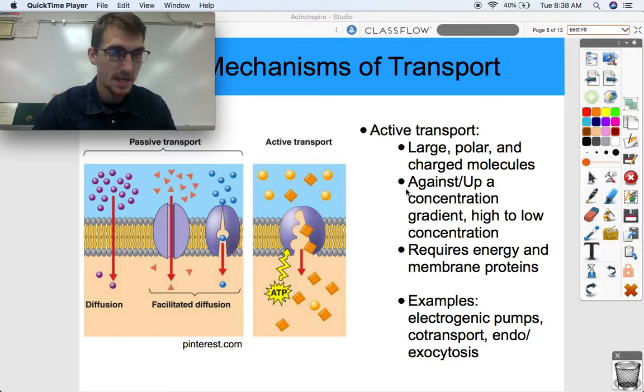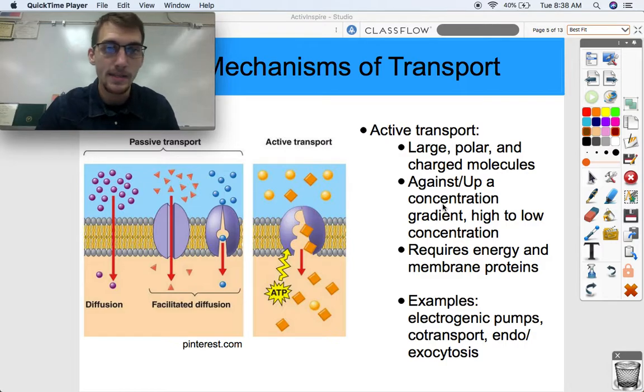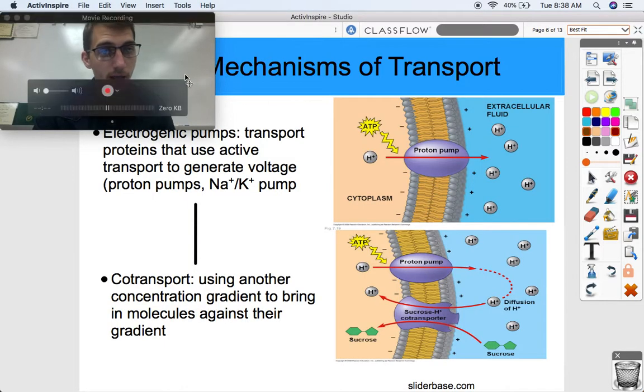Think about this: you're paddling up river or you're biking uphill, you're using more energy and you're going against the gradient. Some examples of active transport involve electrogenic pumps, co-transport, and through the actions of endocytosis and exocytosis, which we'll talk about here in just a minute. Active transport requires energy and goes against the concentration gradient.